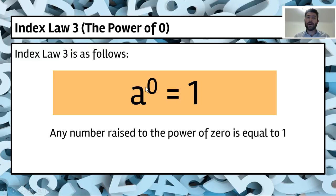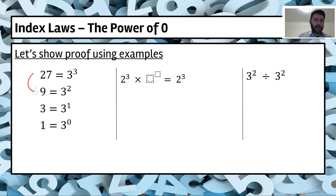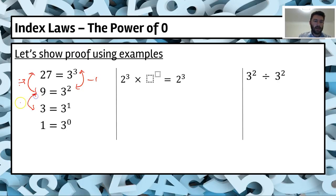Any number to the power of zero will equal one. Let's have a look at the left hand side — we've got a pattern here with powers of three. We start at three to the power of three equals 27. Moving down the chain, we've divided by three each time, and with the indices we've taken one off each time.